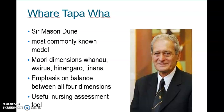One of these Māori models of health is the whare tapa whā, invented by Sir Mason Durie — the most commonly known model. It has four dimensions: whānau, wairua, hinengaro, and tīnana. The emphasis is based on balance between all four dimensions, and it is a useful nursing assessment tool because it is very holistic in nature. Whānau considers the social aspect of wellbeing, wairua considers the spiritual aspect, hinengaro considers the psychological and mental aspect, and tīnana considers our physical wellbeing.